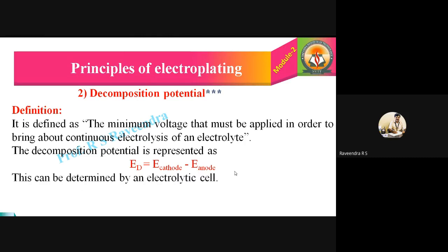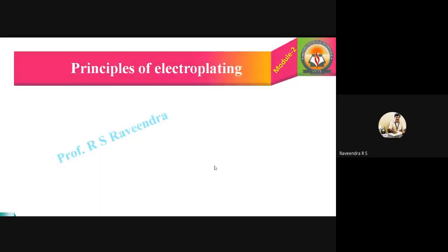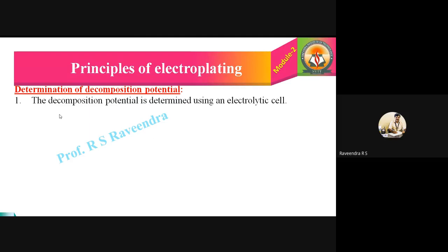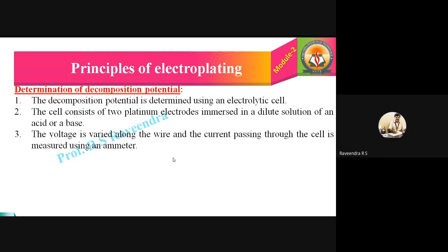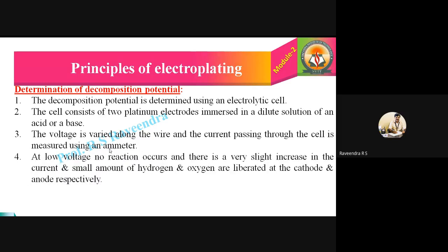This can be determined using an electrolytic cell consisting of two platinum electrodes immersed in a dilute solution — let us assume dilute sulfuric acid. The voltage is varied along a wire, and the current passing through the cell is measured using an ammeter. To measure current we have an ammeter, and to vary voltage we have a voltmeter fixed in the circuit.